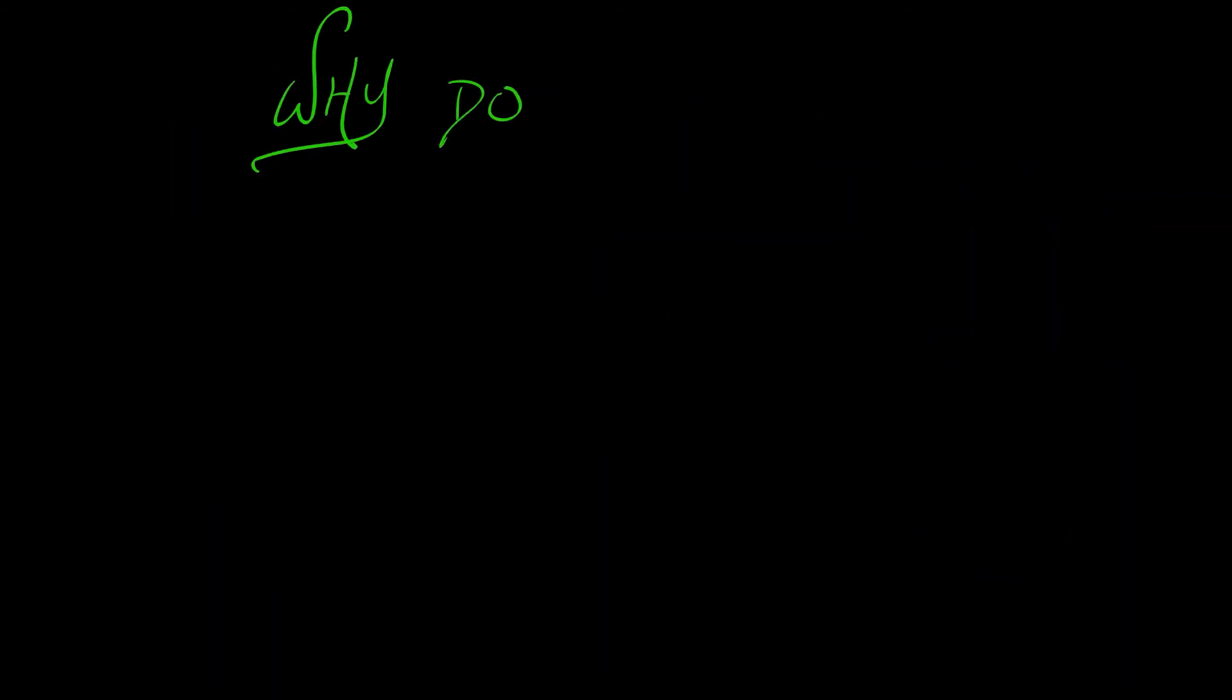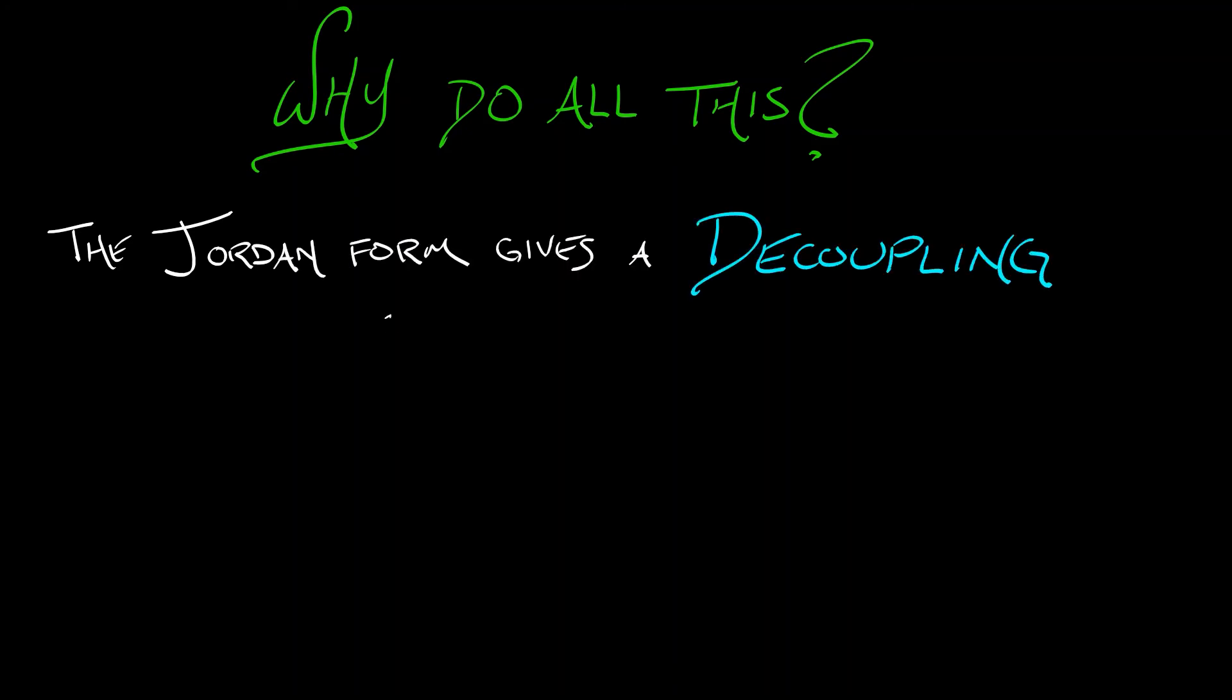Why is a block diagonal matrix so good? It's good because it decouples the variables as much as possible. It decouples the system.